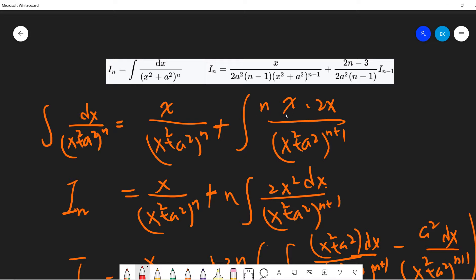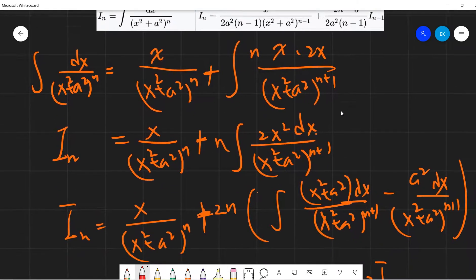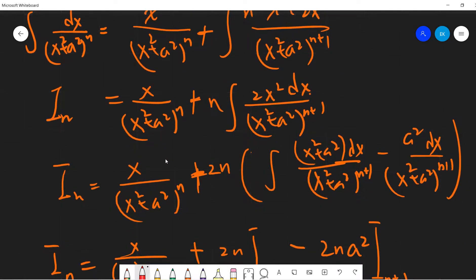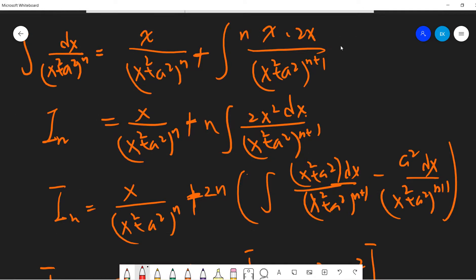So we get plus n and x, and then this 2x is the derivative of this, right? x squared plus a squared to the n plus 1. And we get this, sorry there should be a dx here. So plus n times 2x squared dx over x squared plus a squared to the n plus 1.